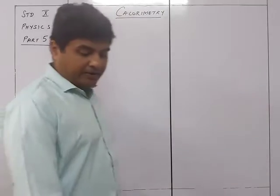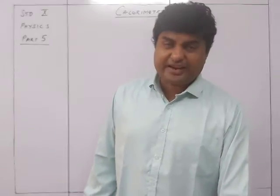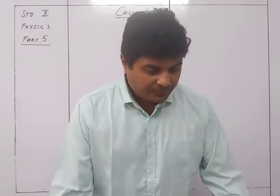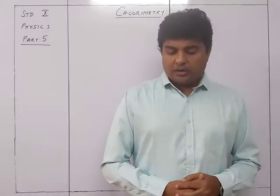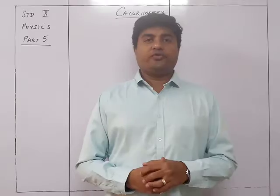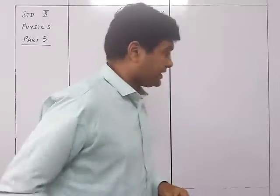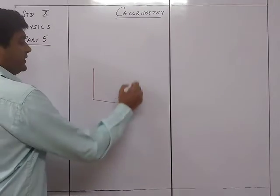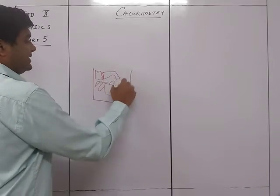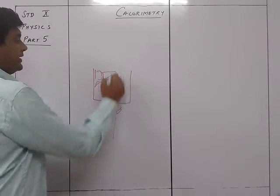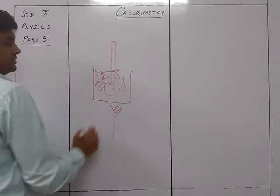We now continue with the second part of the chapter on calorimetry: change of phase or state and latent heat. Suppose I take a container filled with ice and start heating it with a thermometer inside — you'll find the thermometer will be showing zero degrees Celsius.